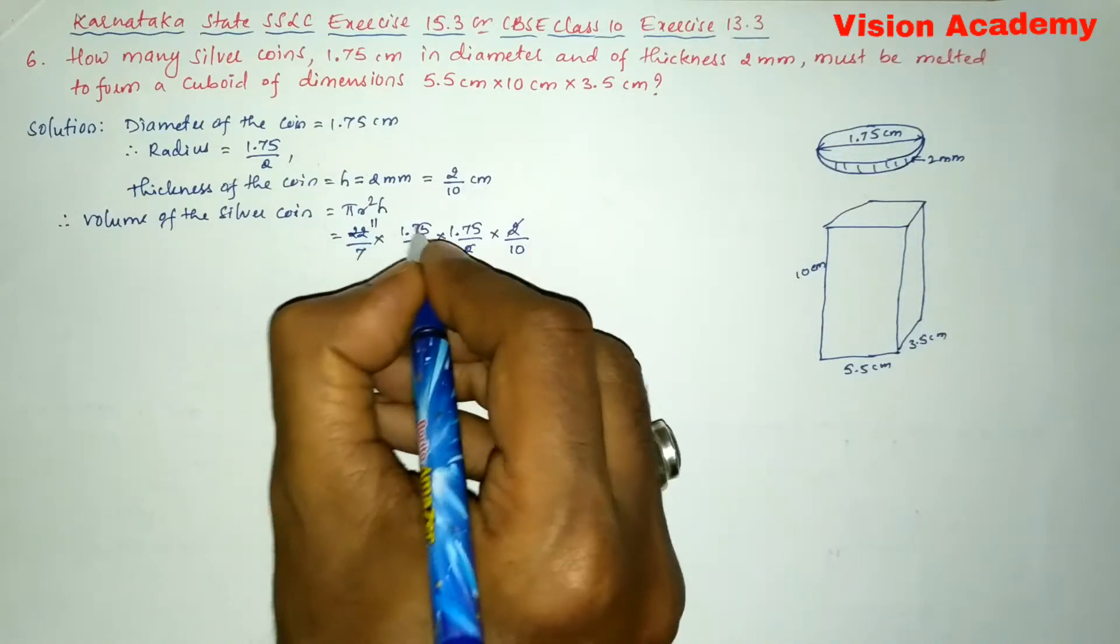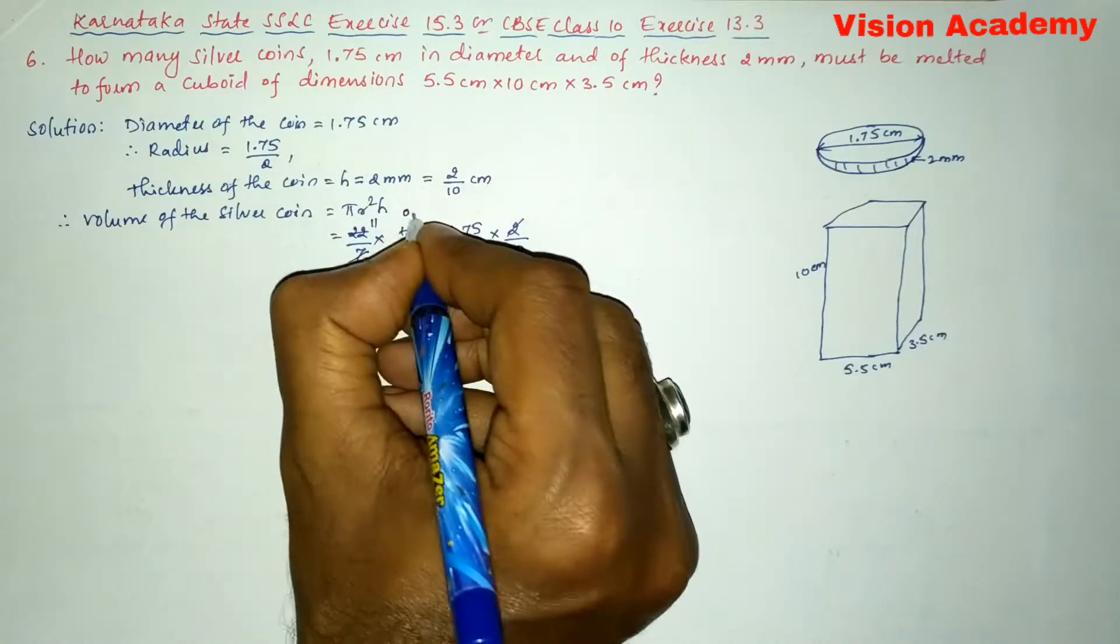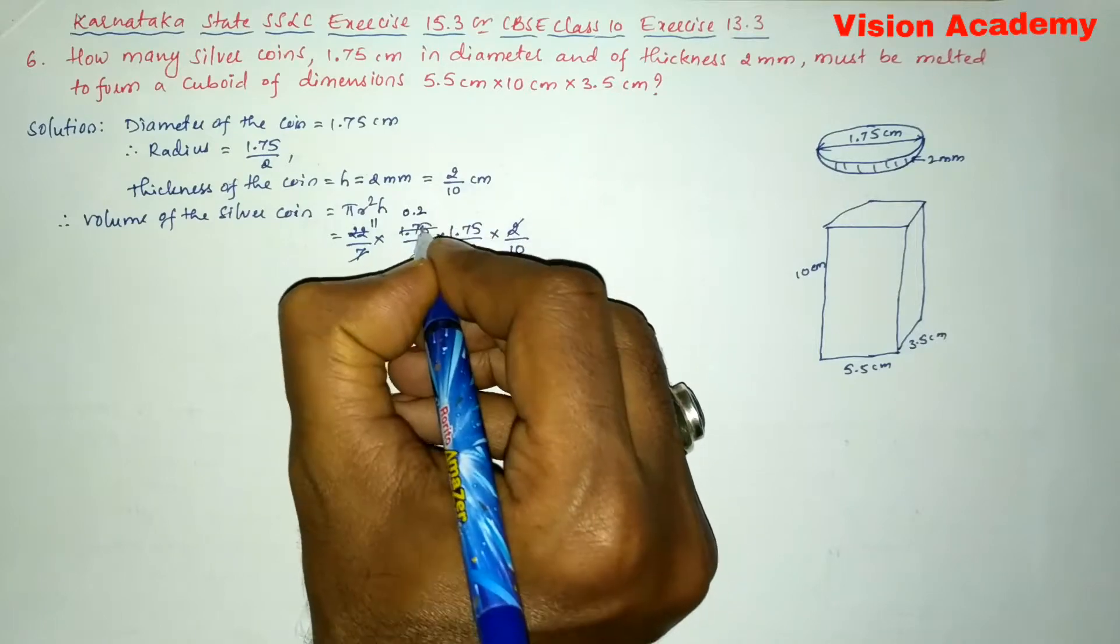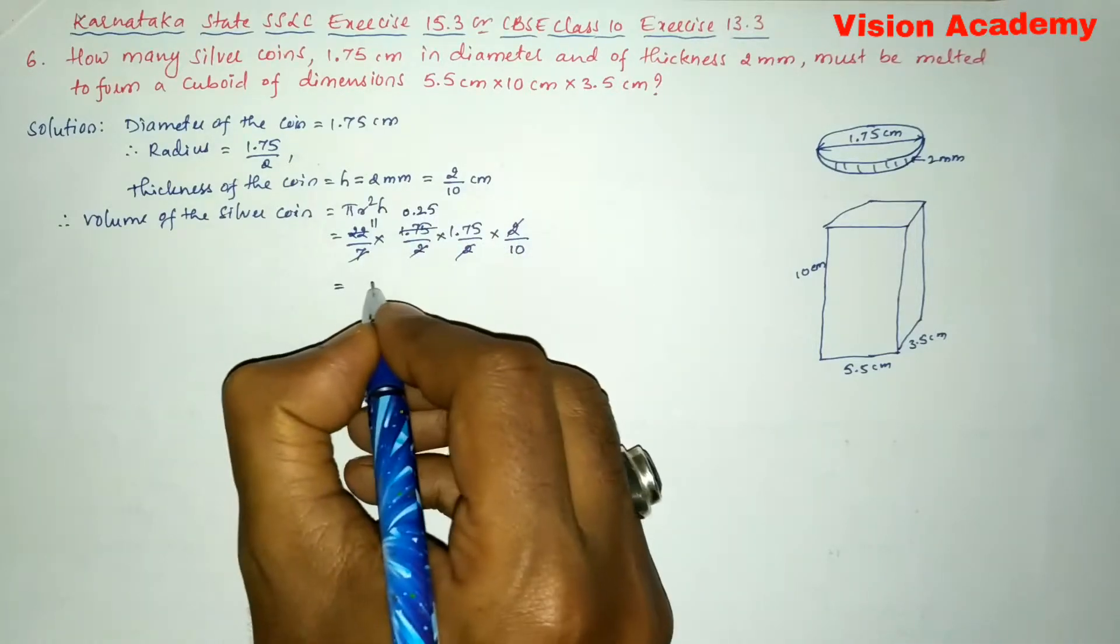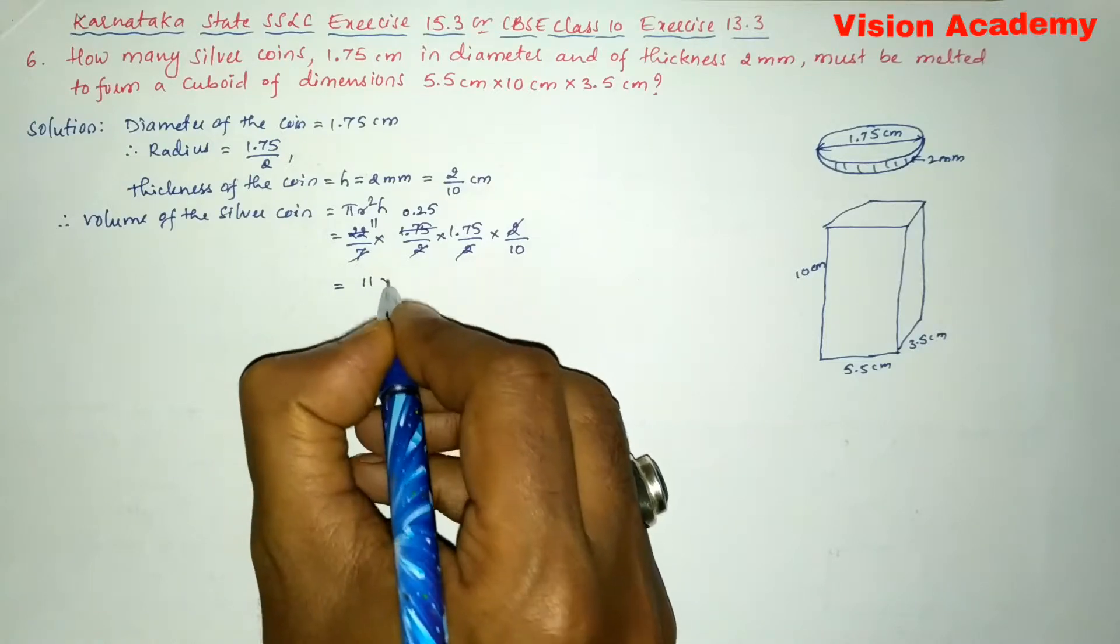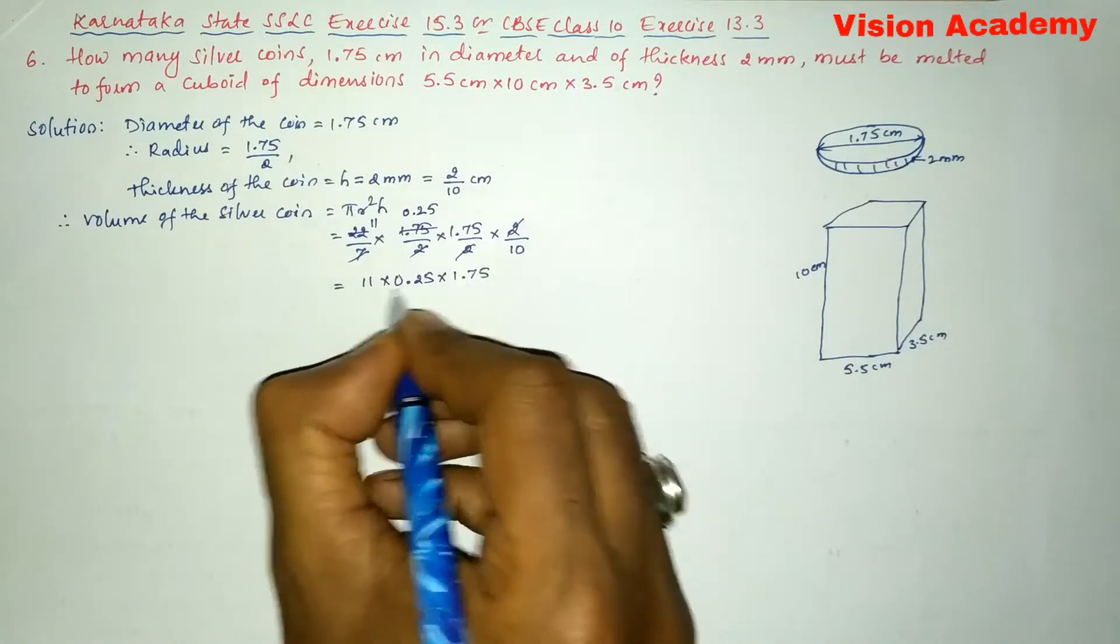1.75 will get cancelled by 7, so 7 × 2 is 14, 7 × 5 is 35. So here we are going to get 11 × 0.25 × 1.75 all divided by 10. This gives us 11 × 0.25 × 1.75 gives us 4.8125 divided by 10, so this gives us 0.48 centimeter cube.